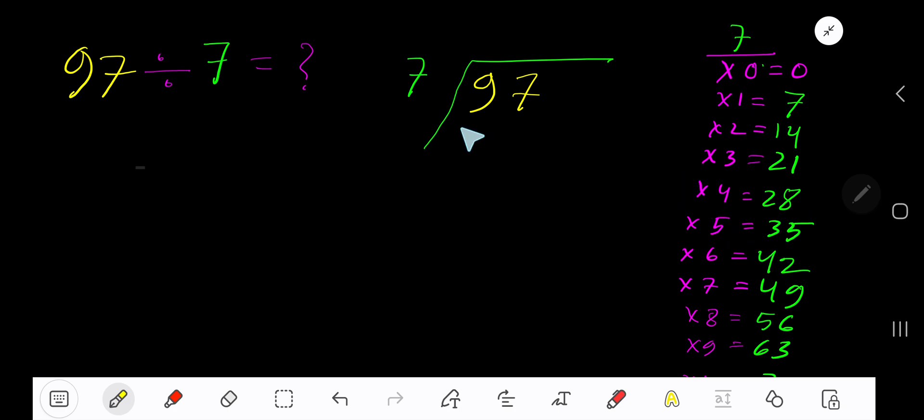21 plus 7 is 28. This process continues. 7 goes into 9 how many times? 2 times would be 14, which is greater, so 1 time. 1 times 7 is 7.